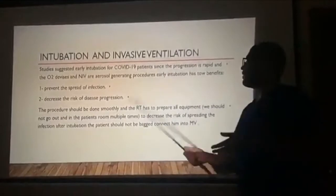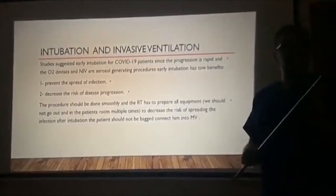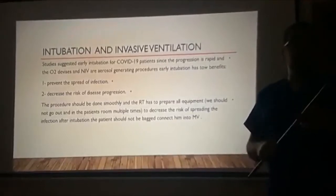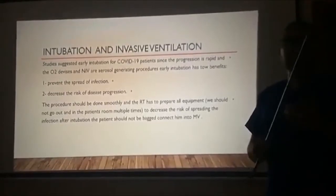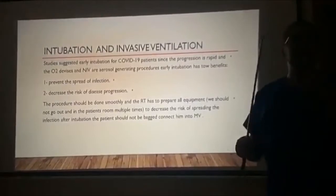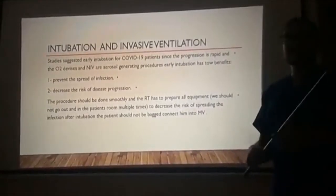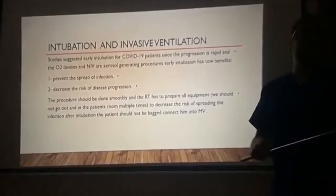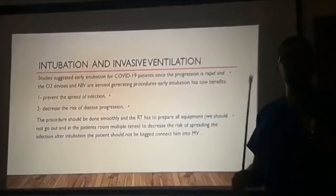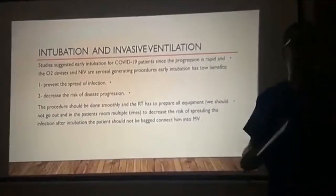For the intubation procedure, the RT needs to prepare all equipment, even equipment that might not be used. Prepare all ETT sizes — for adults, sizes 6 up to 8.5. Prepare the stylet, bougie, CO2 detector, and ambu bag. Prepare every piece of equipment, even if there is a chance of not using it, because we need to limit going in and out of the patient room to limit transmission of COVID-19. After intubation, the patient should not be placed on an ambu bag since it is an aerosol-generating procedure. We should immediately place the patient on the mechanical ventilator, start ventilation, and then confirm tube placement with X-ray or stethoscope.